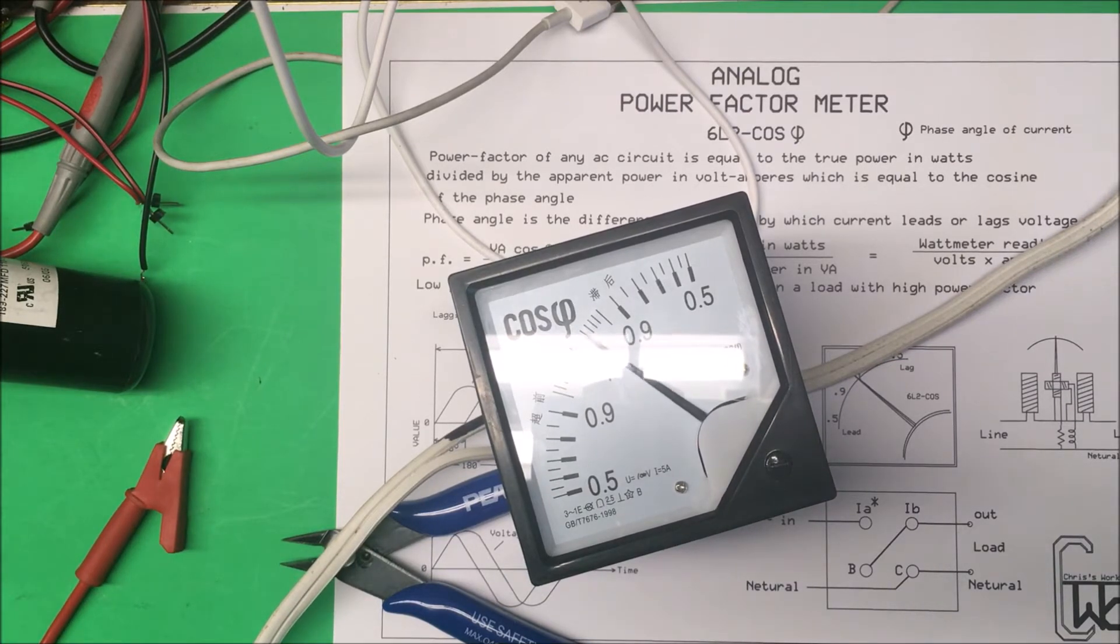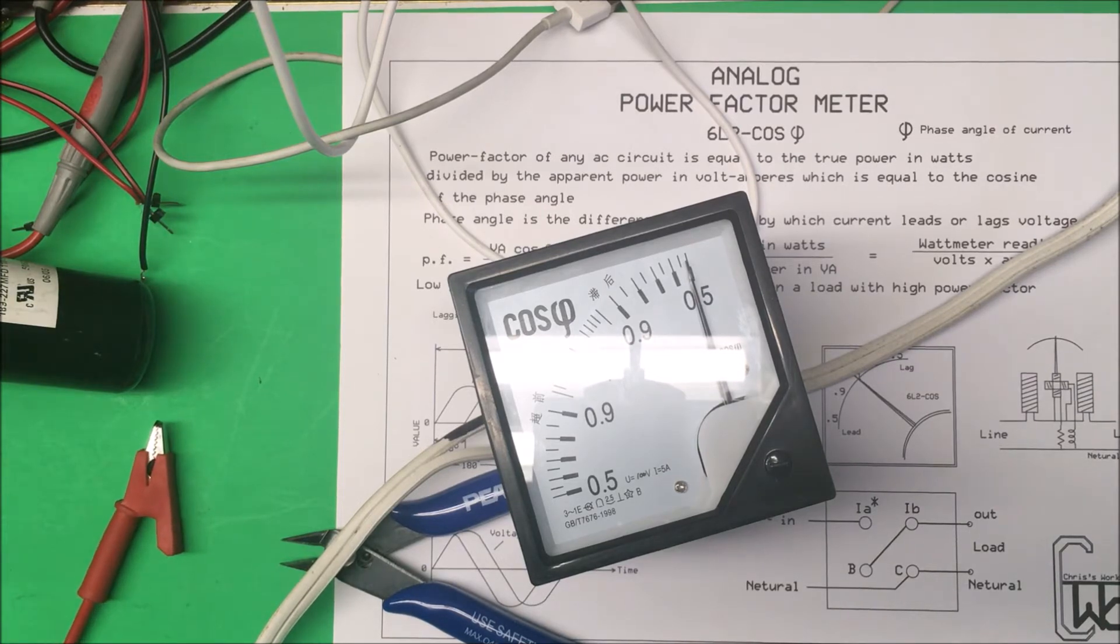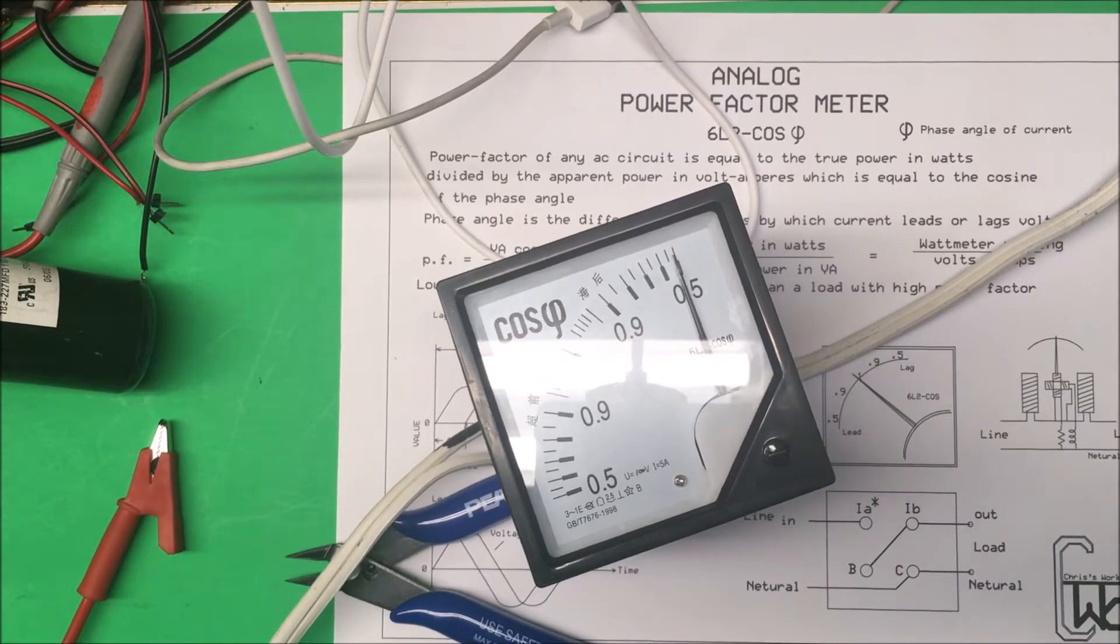Now what I'm going to do is turn on the fluorescent light and put the capacitor across there, see if it actually brings the power factor down.